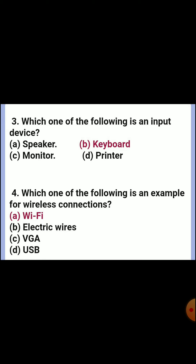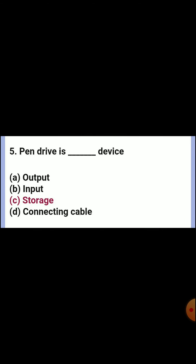Fourth one: which one of the following is an example for wireless connections? Answer A, Wi-Fi. Fifth one: pen drive is a dash device? Answer C, storage device.